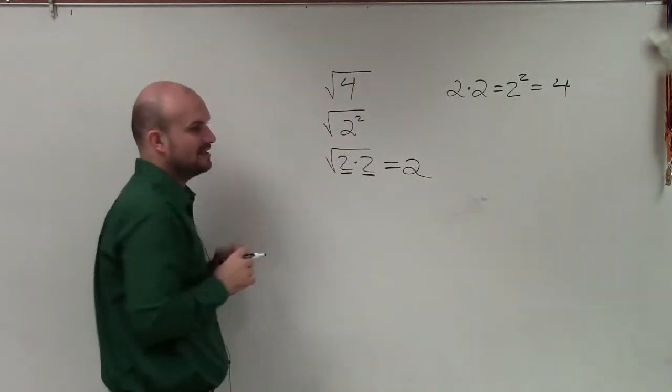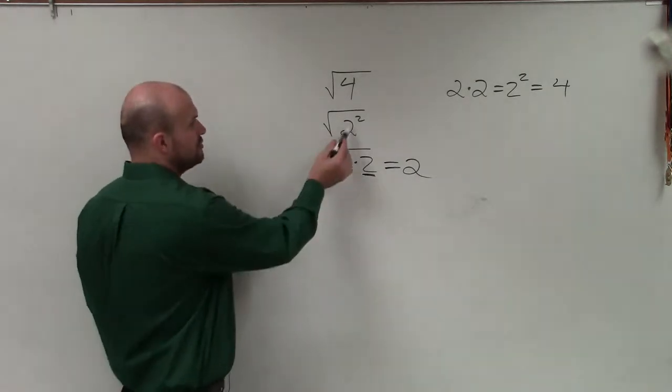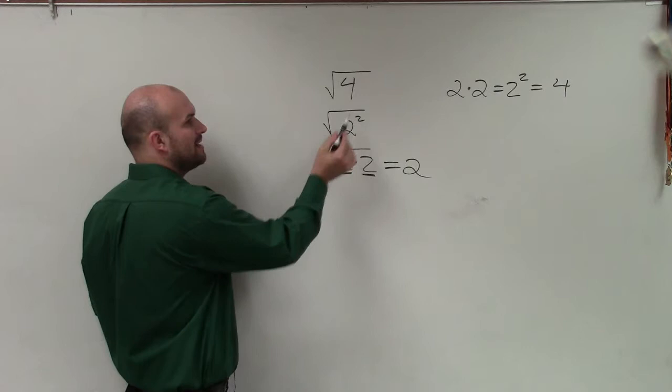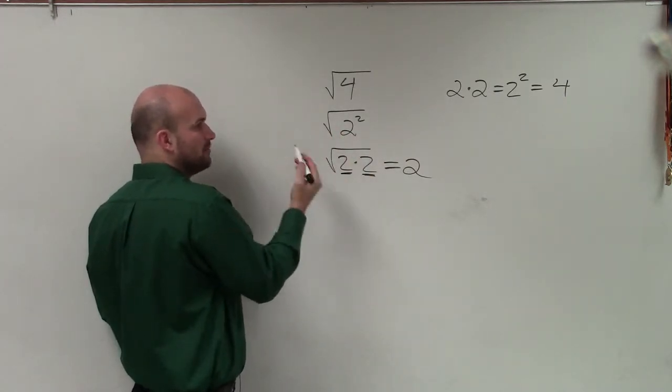When looking at square roots and squaring, they're inverse operations of each other. 2 squared is the same number multiplied by itself, and the square root asks what number multiplied by itself.